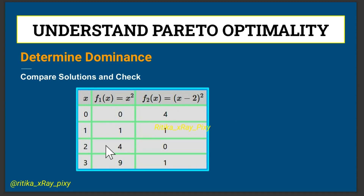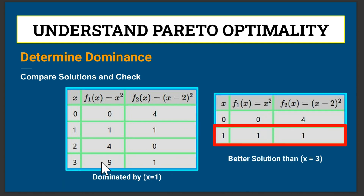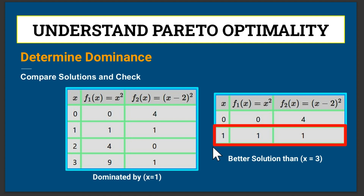When x = 2, this minimizes the second objective function but gives a higher value for the first. When x = 3, this solution is dominated by x = 1. When we put x = 1, it gives a balanced trade-off between both objectives. So the solution at x = 3 is dominated by x = 1, since x = 1 provides a better or equal outcome for both objectives.